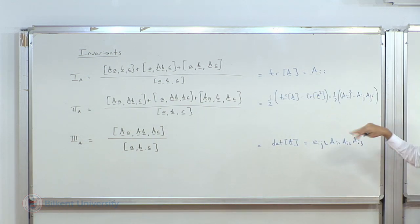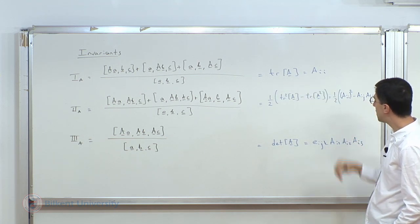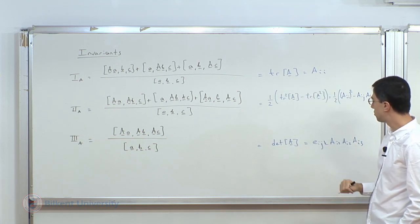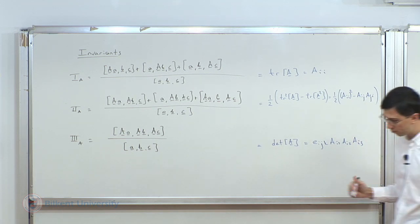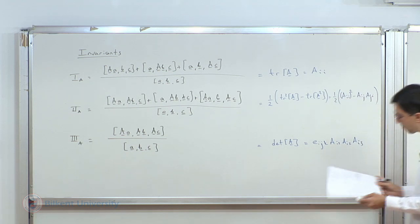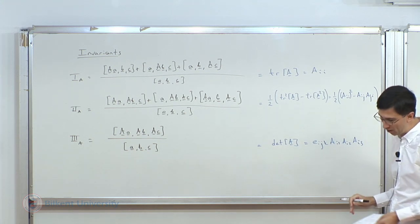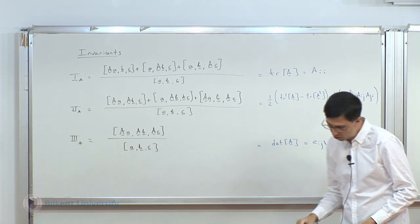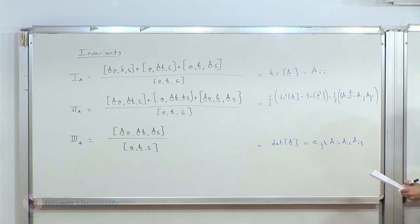The first and third invariants will appear quite a lot. The first one is called the trace, the last one is the determinant, and the second one is another expression. I'm going to try to keep this on the board and make use of it again this lecture.